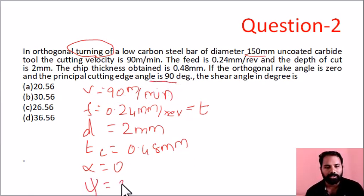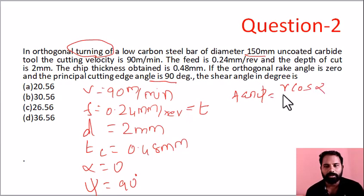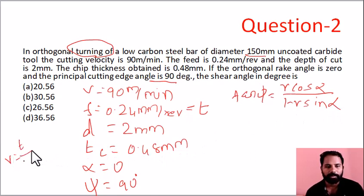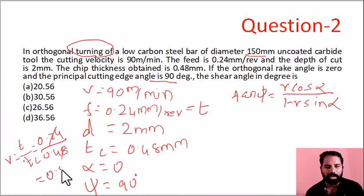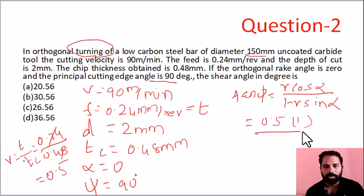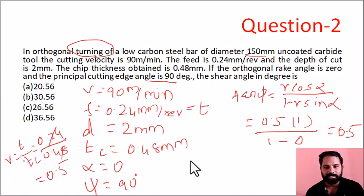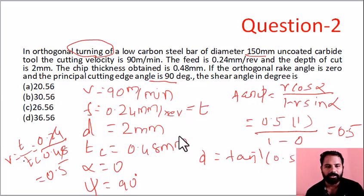We need to find the shear angle φ. We know tan φ equals R cos α divided by 1 minus R sin α. R equals T divided by Tc. In a turning operation, T equals feed, so R equals 0.24 divided by 0.48, which equals 0.5. Therefore tan φ equals 0.5 times cos 0 divided by 1 minus 0.5 times sin 0, which simplifies to 0.5. So φ equals tan inverse of 0.5, which is 26.56 degrees.